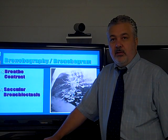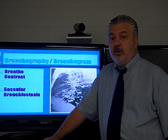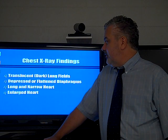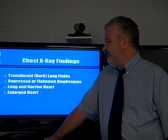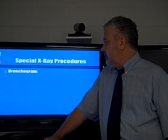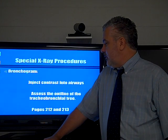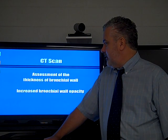The chest X-ray findings — if you know obstructive disease, you'll know what to expect. The bronchogram procedure is described in the book, and there's a good CT scan picture of bronchiectasis in the book as well. Look for that image — expect to see it on the test.